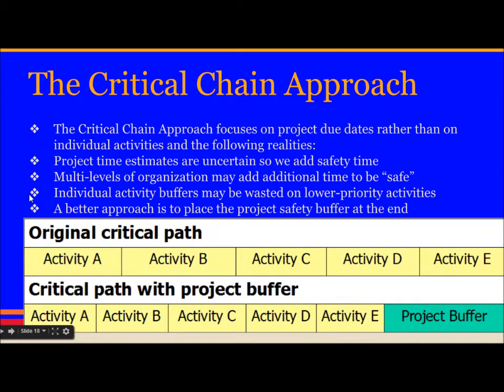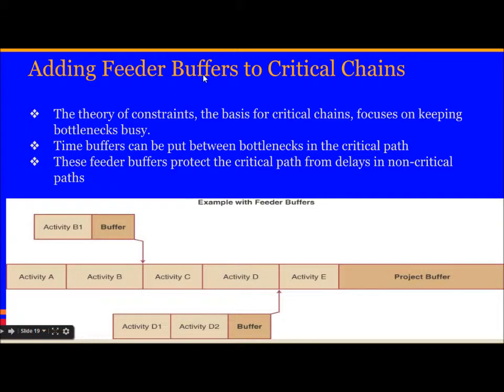The second method is the critical chain approach. The critical chain approach focuses on project due dates rather than on individual activities, based on the following realities: project time estimates are uncertain so we add safety time; multiple levels of organization may add additional time to be safe; individual activity buffers may be wasted on lower priority activities. A better approach is to place the project safety buffer at the end of the critical path. Time buffers can also be put between bottlenecks in the critical path — these feeder buffers protect the critical path from delays in non-critical paths.